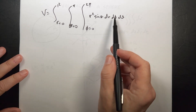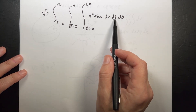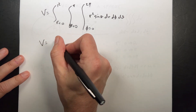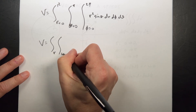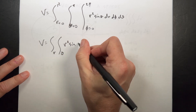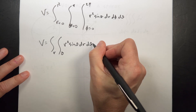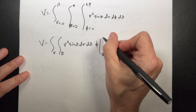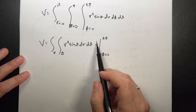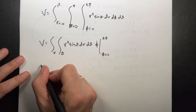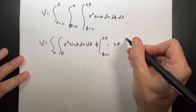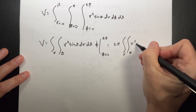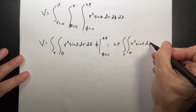Let's do the easiest integral first — integrate over dφ. There's no other φ term in there, so the integral of dφ is just φ. Evaluating from 0 to 2π gives 2π. So this becomes 2π times the integral over r and theta of r² sin θ dθ.